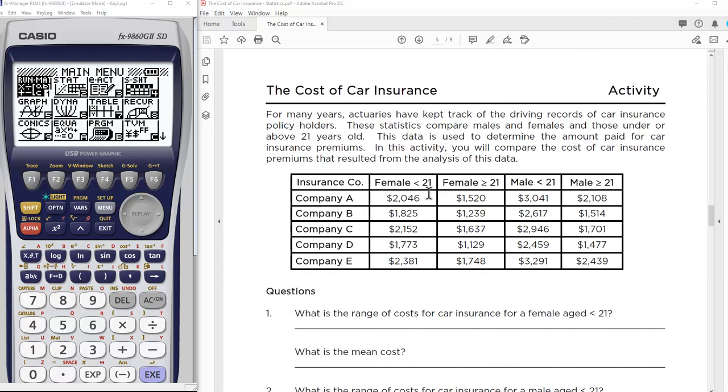We're looking at females under 21, over 21, and males under 21 and over 21. I'm going to show you how to make two box plots and compare the range of females, then males, or even females under 21 to males under 21. There are lots of things you can do depending on which list you turn on. The first thing is how to enter these values from the table into the statistics.